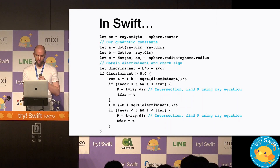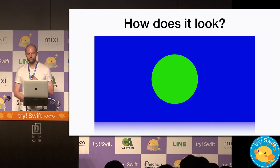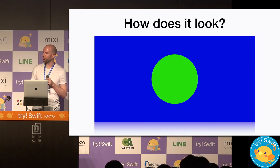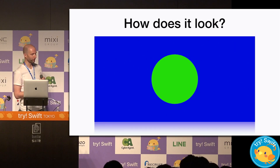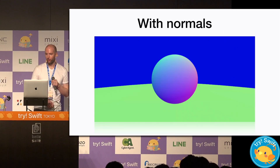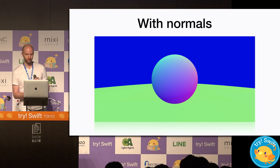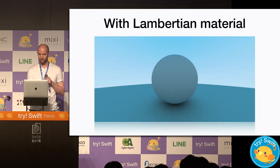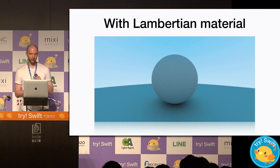So, if we throw some rays into this code, how does it look? Okay, we can't exactly tell it's a sphere yet, but it is round, so that's encouraging. If we render the normals, we can confirm it as a sphere. And if we add something called Lambertian scattering, it starts to look pretty good.